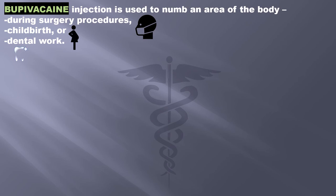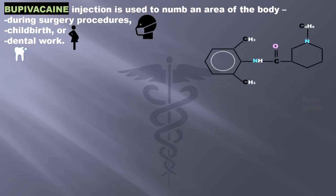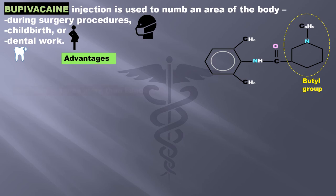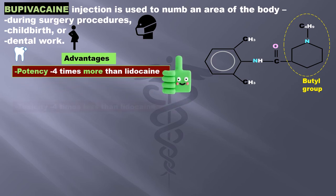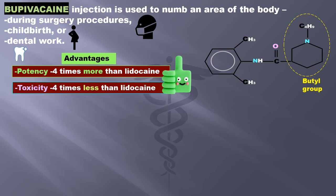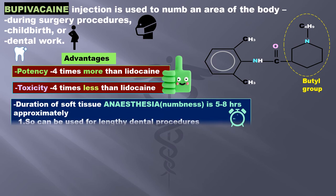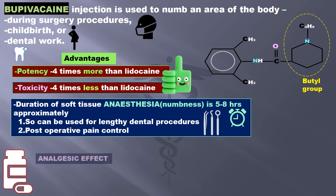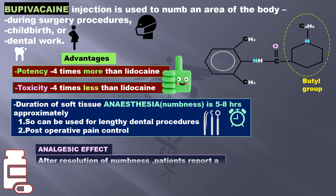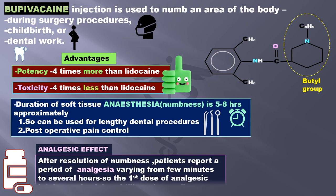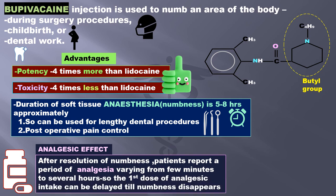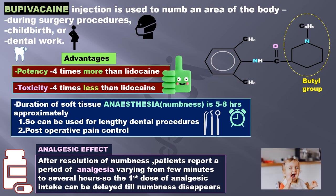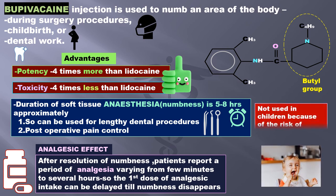Bupivacaine injection is used to numb an area of the body during surgery, childbirth, or dental work. It has a butyl group attached to the terminal amine. Advantages: potency is 4 times more than lidocaine, toxicity is 4 times less than lidocaine, and duration of soft tissue numbness is approximately 5 to 8 hours. So it can be used for lengthy dental procedures and for post-operative pain control. After resolution of numbness, patients report a period of analgesia varying from a few minutes to several hours, so the first dose of analgesic intake can be delayed until the numbness disappears.